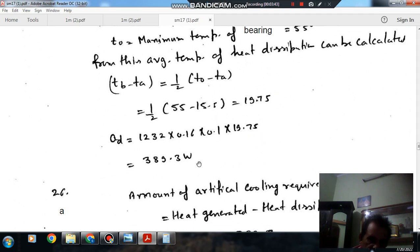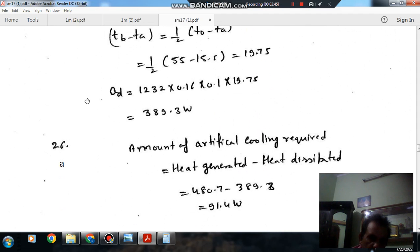Put in the value of C, A and temperature difference, that is 389.3 Watt. So heat dissipated is 389.3 Watt.